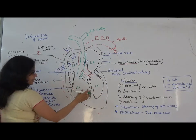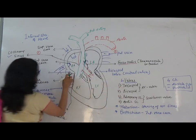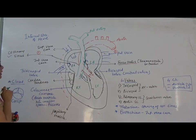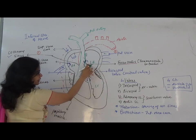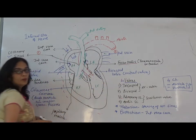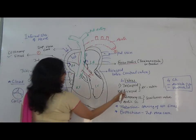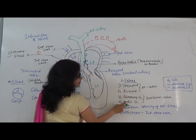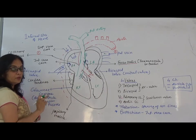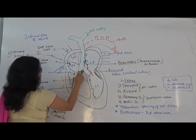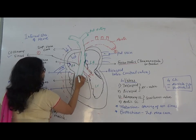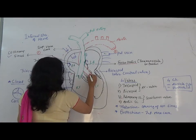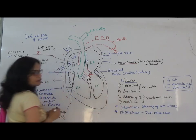To summarize the four valves: the tricuspid valve is present between the right auricle and right ventricle; the bicuspid valve (also called the mitral valve) is present between the left auricle and left ventricle. Both are called atrioventricular valves. Additionally, the pulmonary semilunar valve is present at the opening of the pulmonary artery, and the aortic semilunar valve is present at the opening of the aorta.